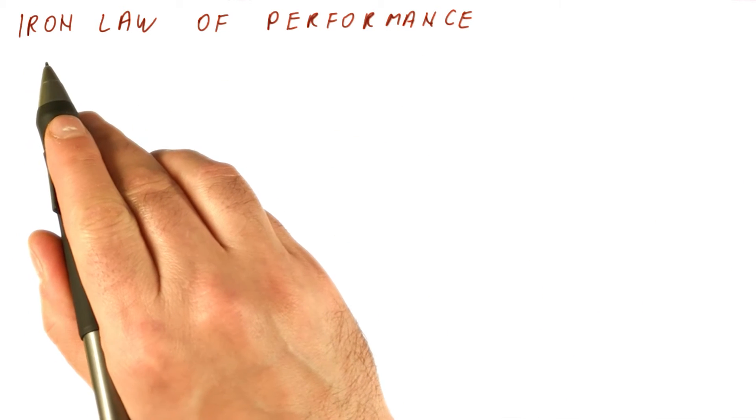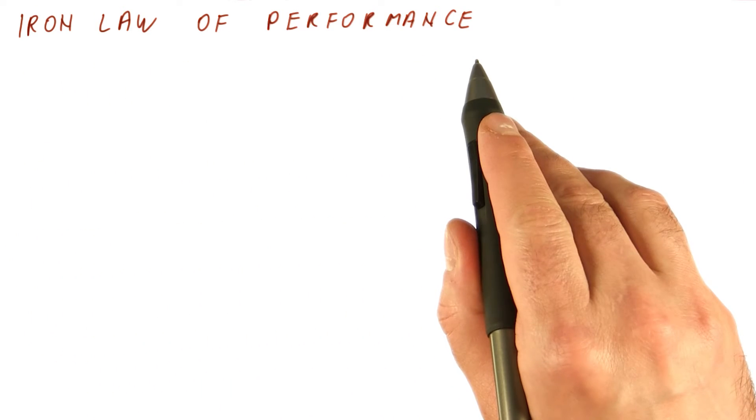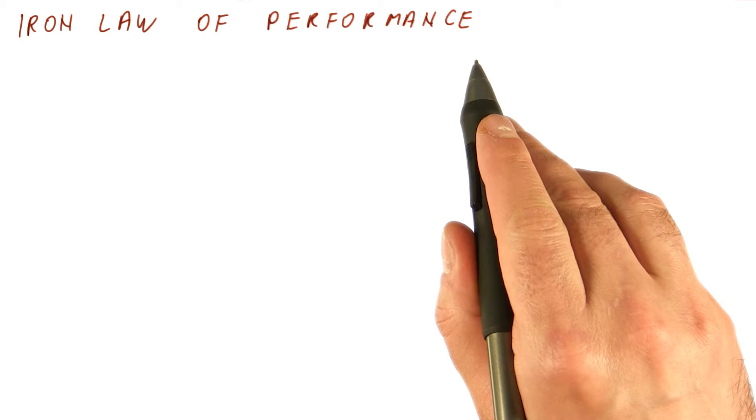The next thing we will discuss is the so-called iron law of performance. For a large part of this class, we will be looking only at the processor itself.